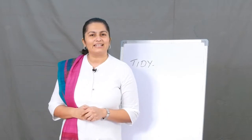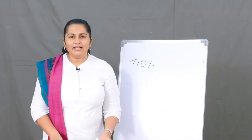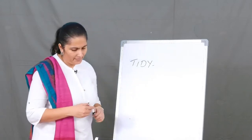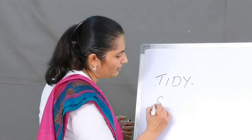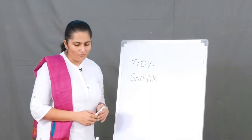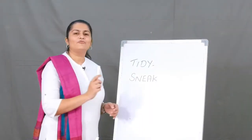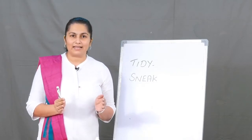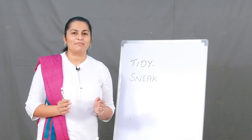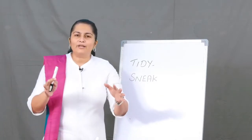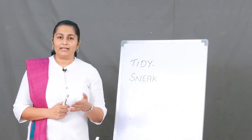Let's go to the next word: 'sneak' — to move quietly with the idea of not getting caught. The wildcat was trying to sneak and attack the helpless baby bird. Next word: 'pounce' — to attack suddenly by jumping on something. The wildcat was trying to pounce on the baby bird.